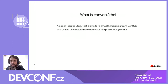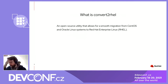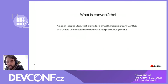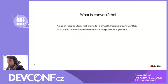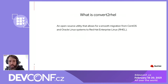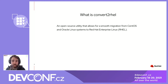So what is ConvertRel? It is an open source utility. We open-sourced it in 2019 and this utility allows you to migrate your CentOS and/or Oracle Linux system to Red Hat Enterprise Linux. It's as simple as that.